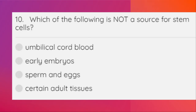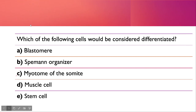Which of the following is not a source for stem cells? The correct option is sperm and egg — no stem cells can be derived from sperm and egg cells. Next, which of the following cells would we consider differentiated? The answer is a muscle cell.